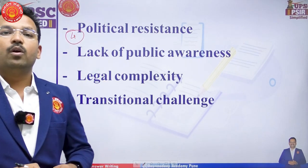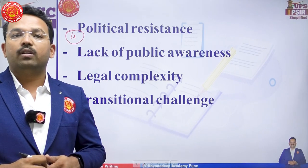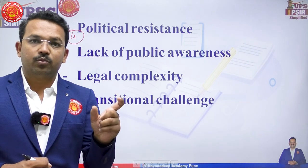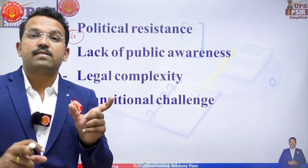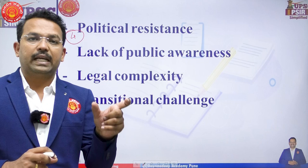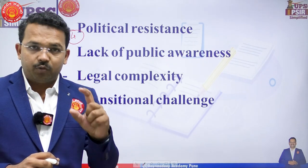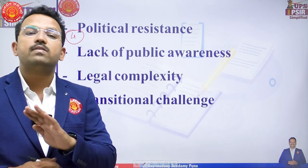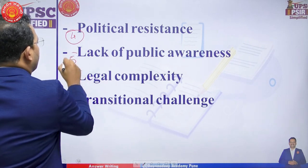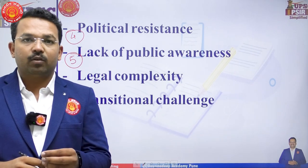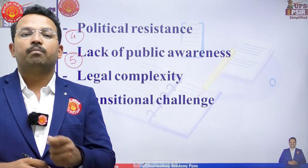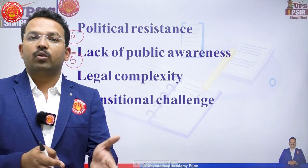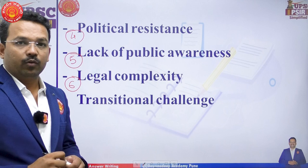The fourth difficulty is political resistance — from all spheres of polity — as people will not be ready for a uniform civil code where everyone is treated equally as a civilian, regardless of religion, caste, sex, race, or place of birth. The fifth is lack of public awareness — the term 'Uniform Civil Code' is being used for political purposes, and many people do not know its actual meaning. The sixth is legal complexity.